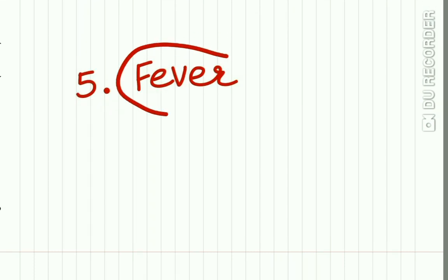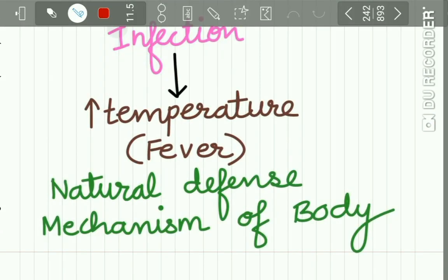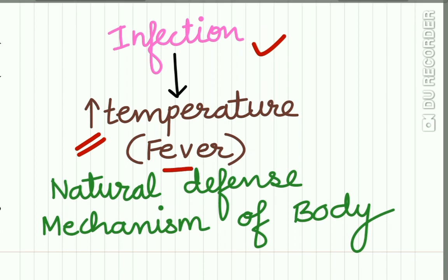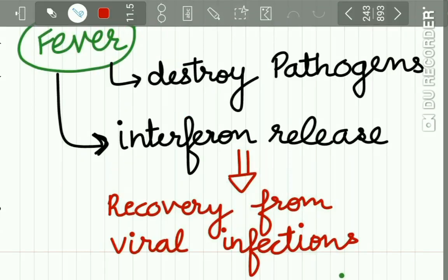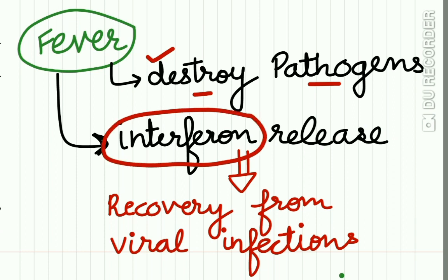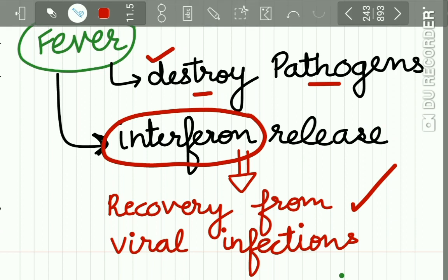The fifth mechanism of innate immunity is fever. Infection causes an increase in body temperature, and fever is a natural defense mechanism of the body. Fever destroys the pathogen inside the body and causes interferon release, which helps in recovery from viral infections.